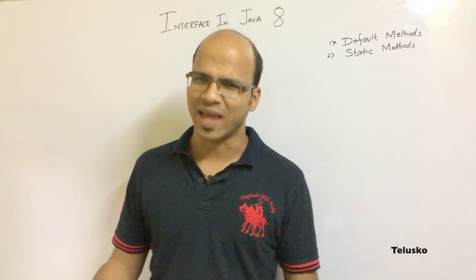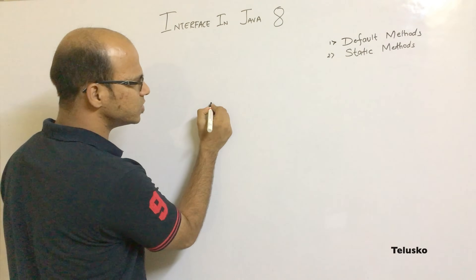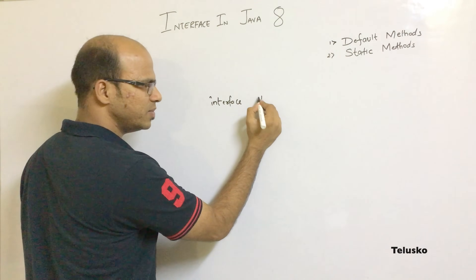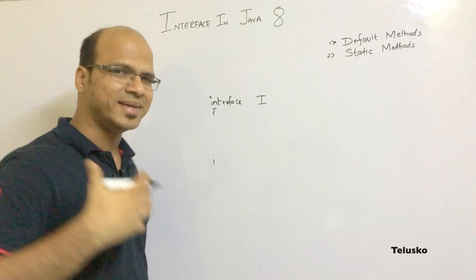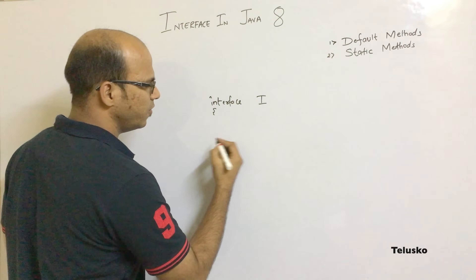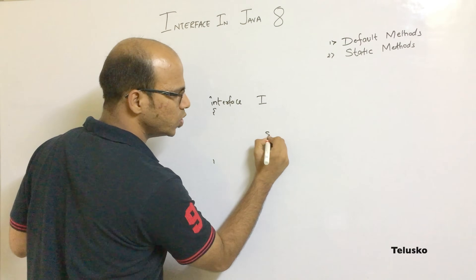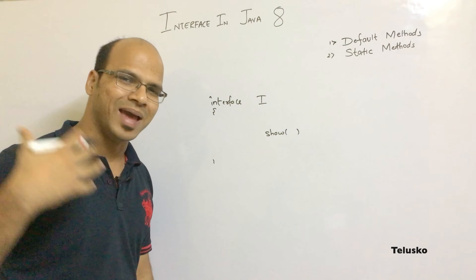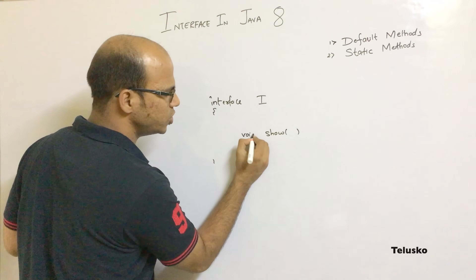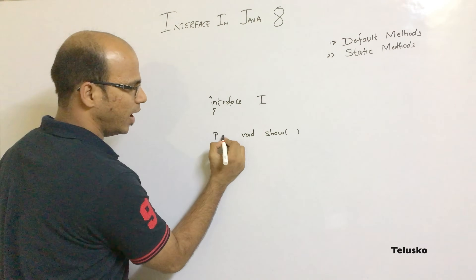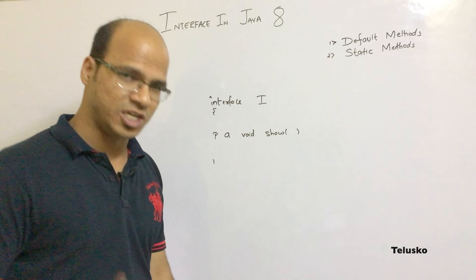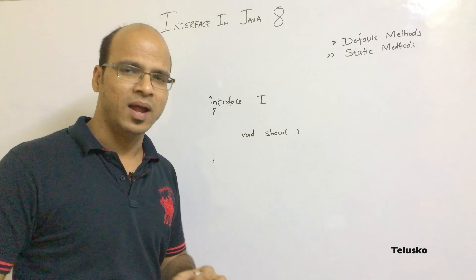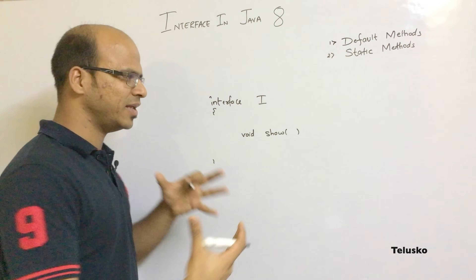So what's new about interfaces? In an interface — let's say interface I — you can only declare methods. For example, a method called show will by default be public and abstract. Even if you don't write those keywords, it is by default public abstract. That's the main difference between abstract class and interface.